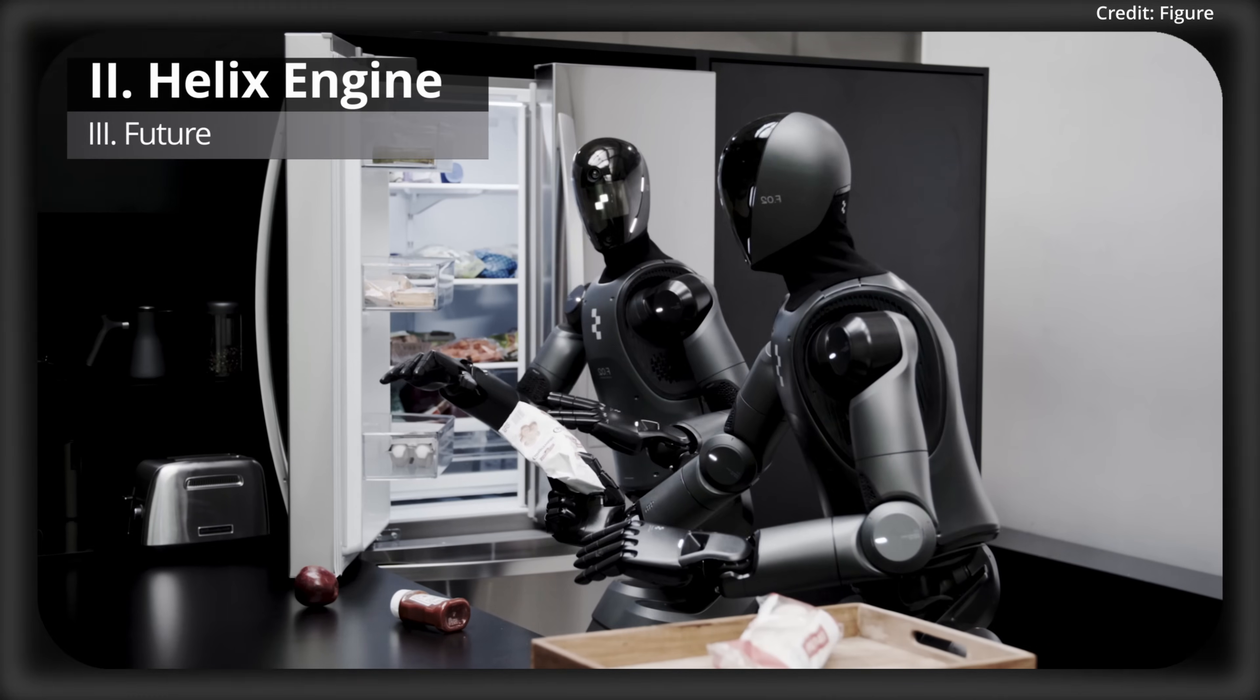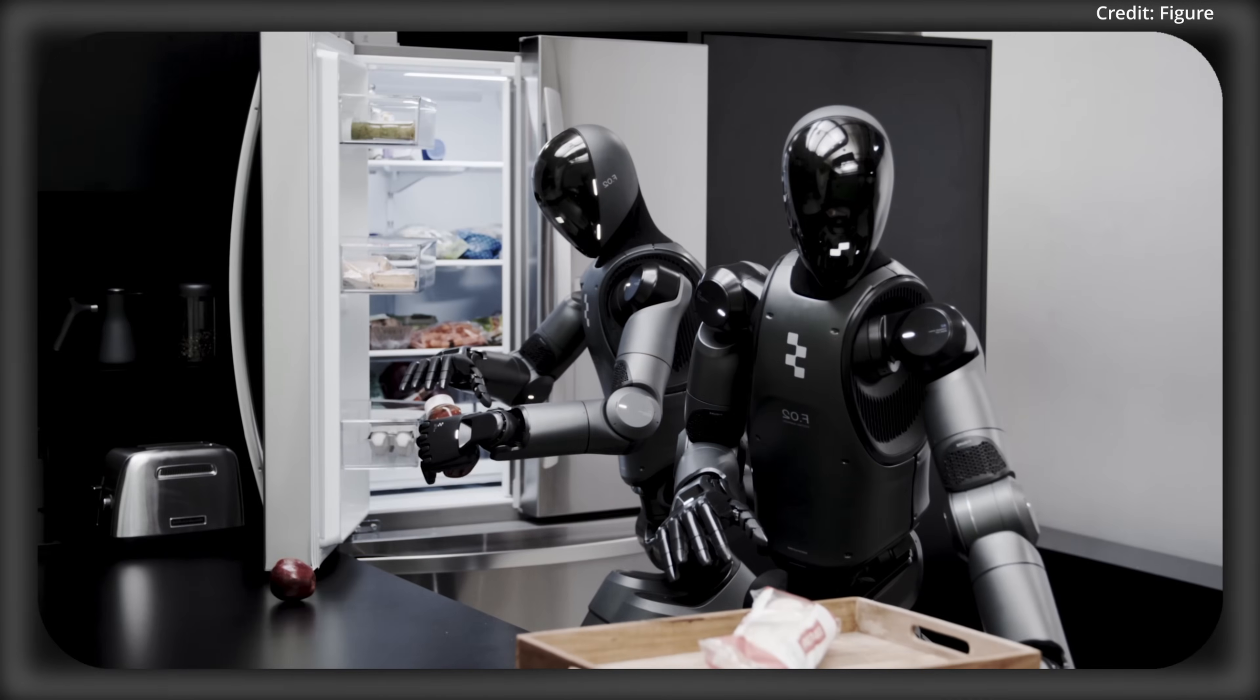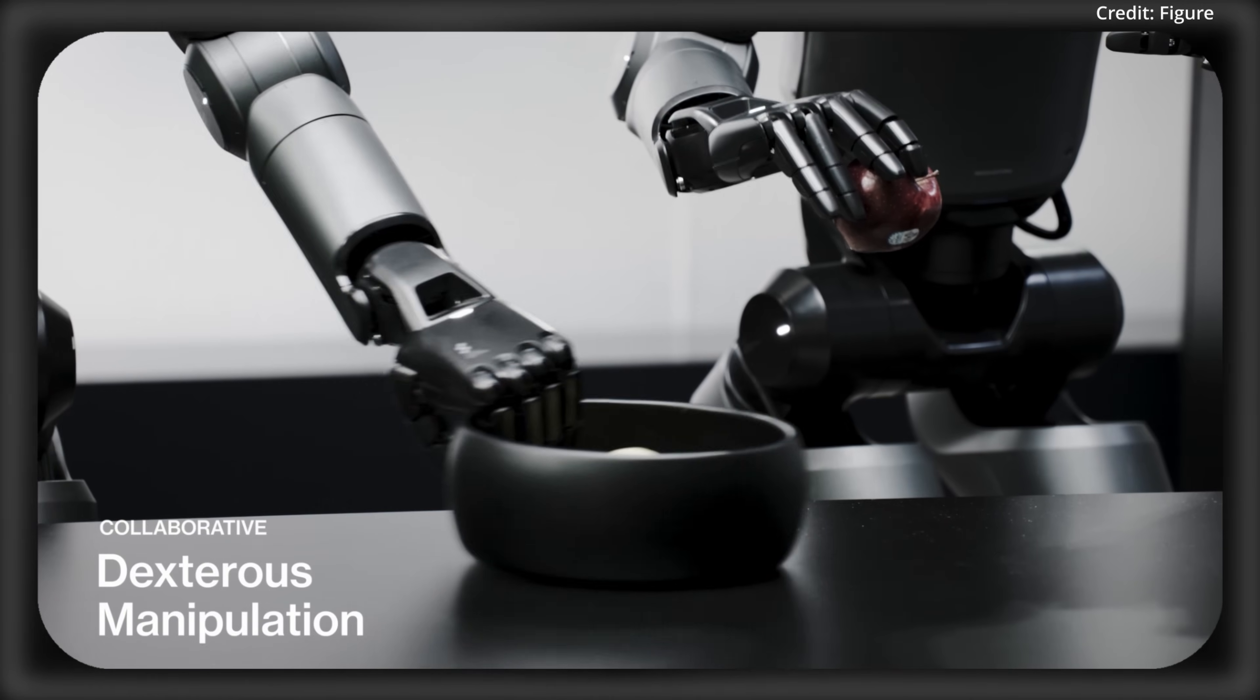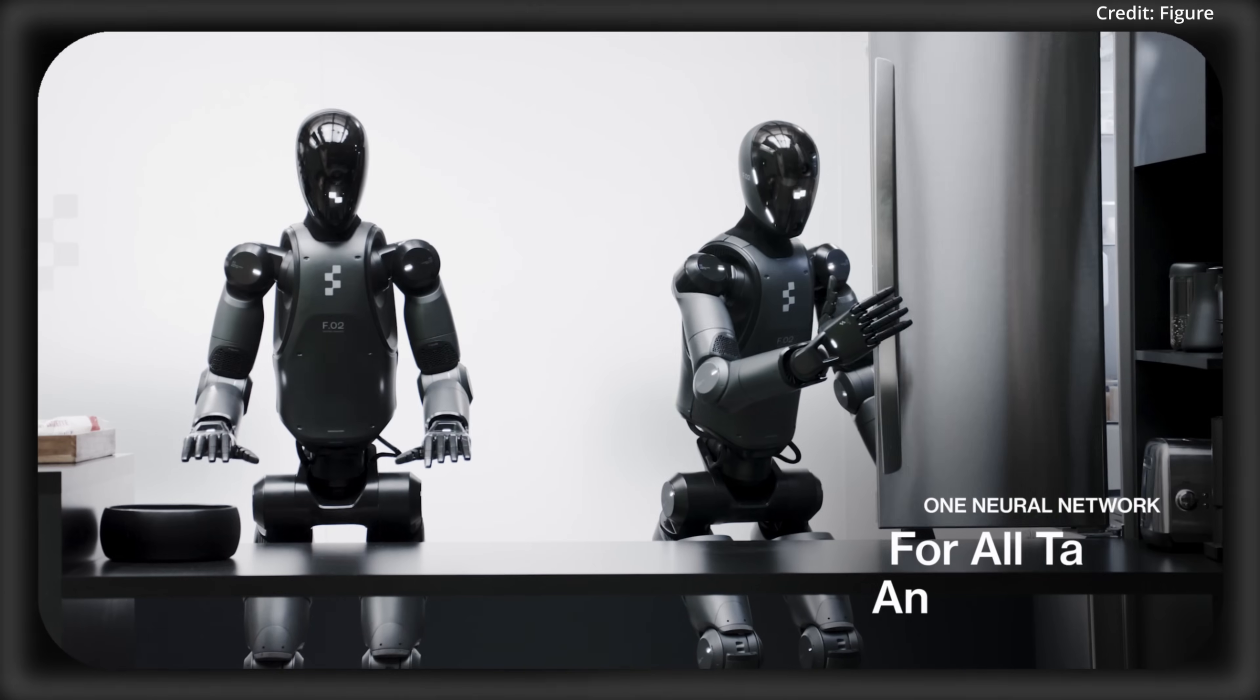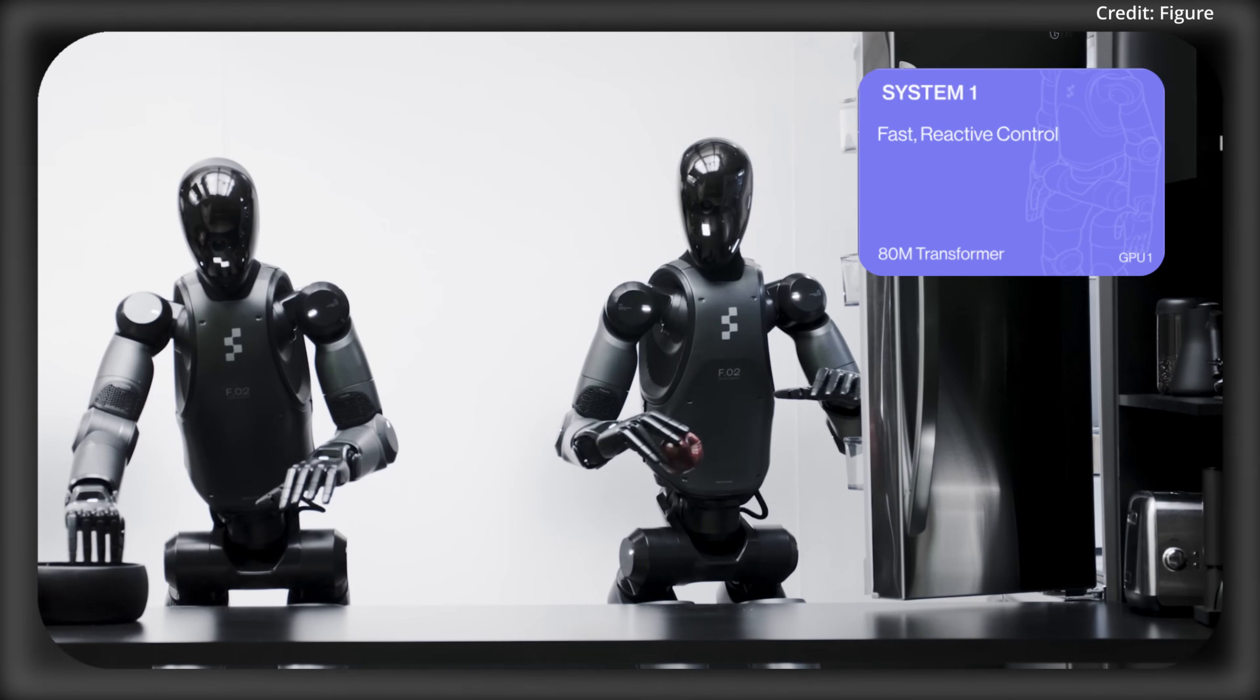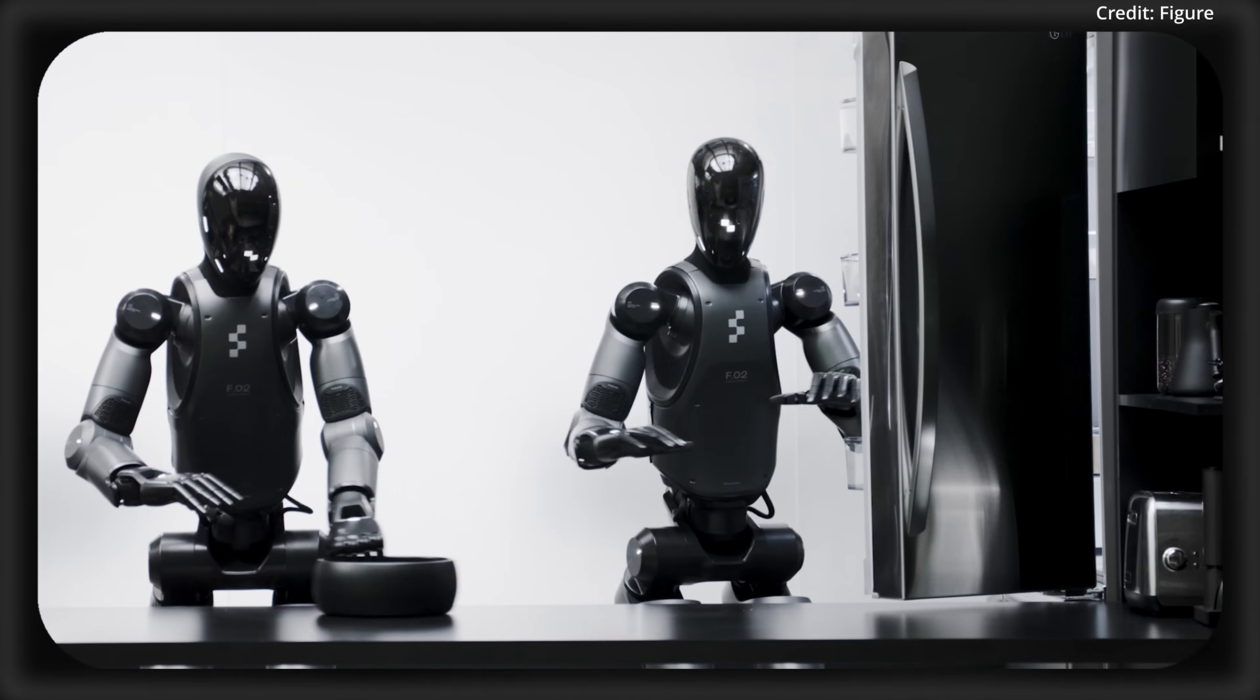But the entire secret to Helix really revolves around its core System 1 System 2 design, which finally solves a classic robotics dilemma. VLMs generalize but lag, while visuo-motor policies speed but stagnate. To solve this, Helix's AI System 2 thinks slow at a speed of just 7 to 9 Hz, processing images and prompts into a semantic vector. This takes place while Helix's AI System 1 thinks fast at 200 Hz, turning it into precise movements and adjusting mid-action as needed.